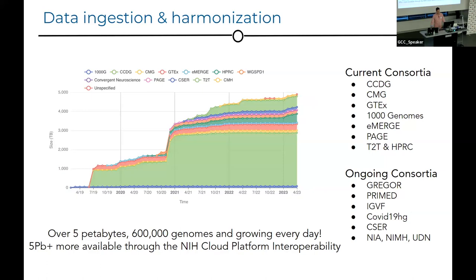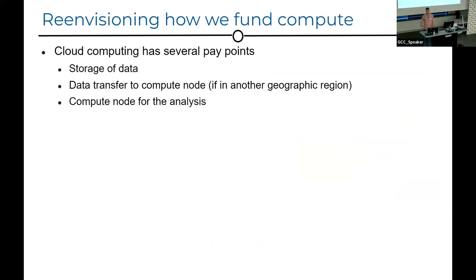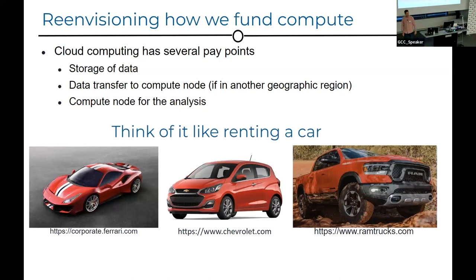We've got five petabytes of data across a number of consortia. The data ingestion team anticipates ingesting another five petabytes by end of year, and potentially doubling that over the next year — possibly reaching 20 petabytes or more in a year or two, together with interoperability across other NIH cloud platforms. This requires us to re-envision how we fund that compute. Cloud computing has several pay points: you pay to store data, pay to transfer data to compute nodes in another geographic region, and pay for the compute node itself.